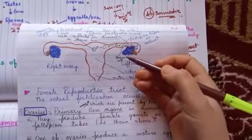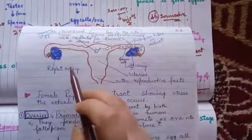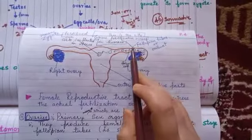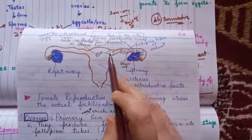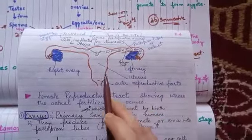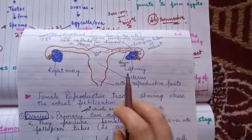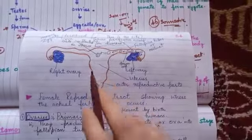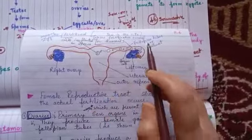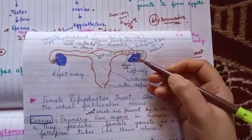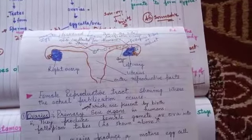The main organs of the female reproductive system are the ovaries — here is the right ovary and this is the left ovary. These tube-like structures are the fallopian tubes. This is the uterus, also called the womb in English terms, and in science it is called the uterus. These are the outer reproductive parts, the external genitalia.